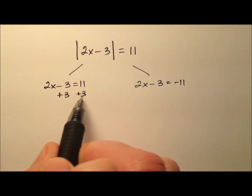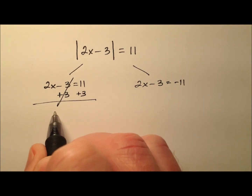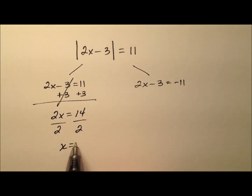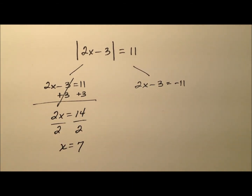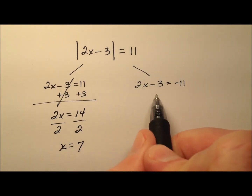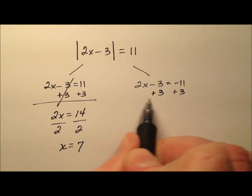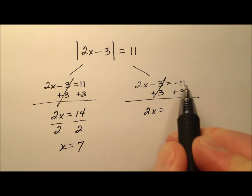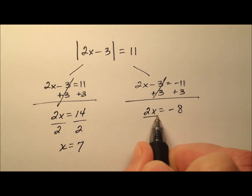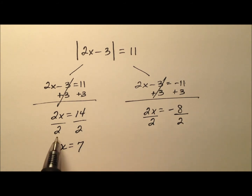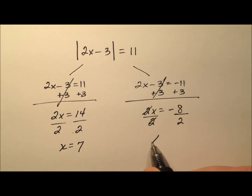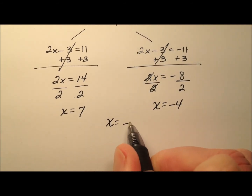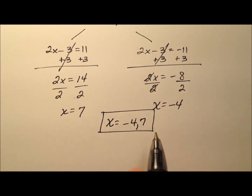I'm going to add 3 to both sides so those 3s cancel, giving me 2x equals 14. Dividing by 2, in the left case I have x equals 7. For the right side, I'll add 3 as well — those 3s cancel — so 2x equals negative 11 plus 3, which is negative 8. Dividing both sides by 2, x equals negative 4. So my solutions are x equals negative 4 and positive 7.